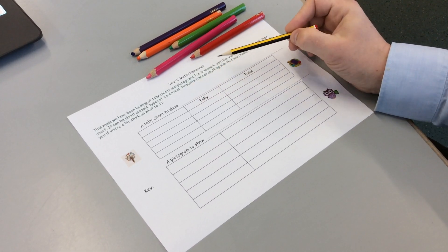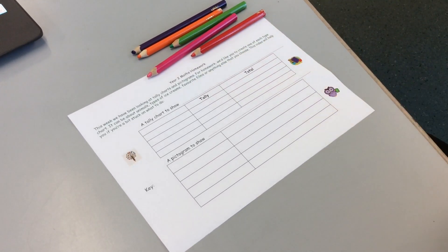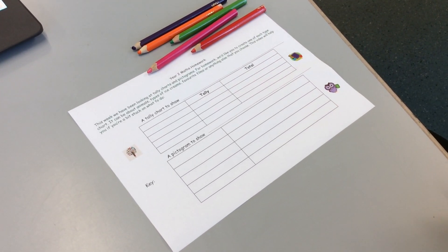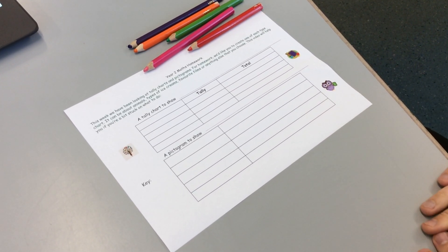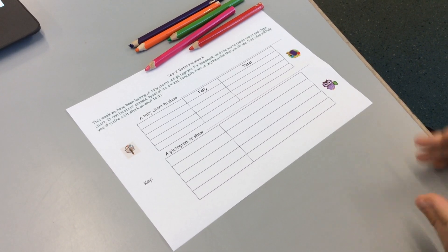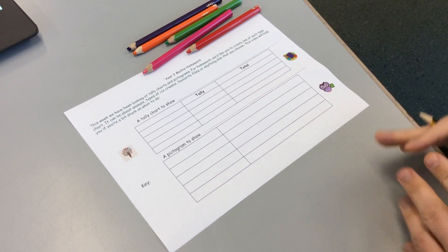So the first one is to make a tally chart. You can make a tally chart about anything that you like, and you'll probably need to ask some people at home, maybe brothers, sisters, ask parents, ask grandparents.